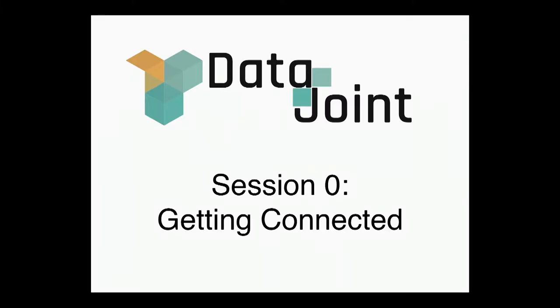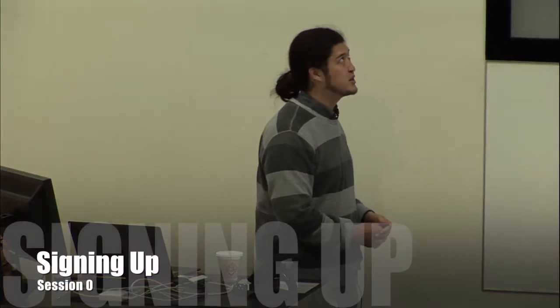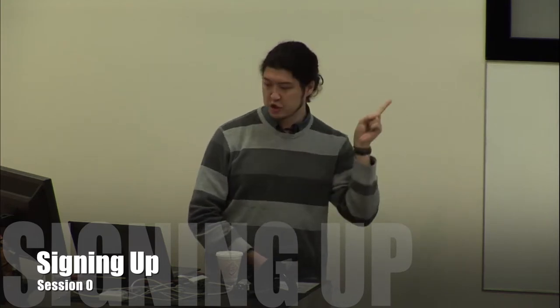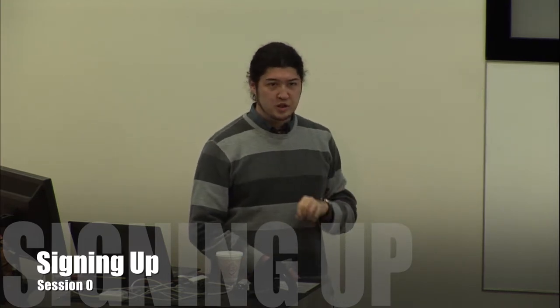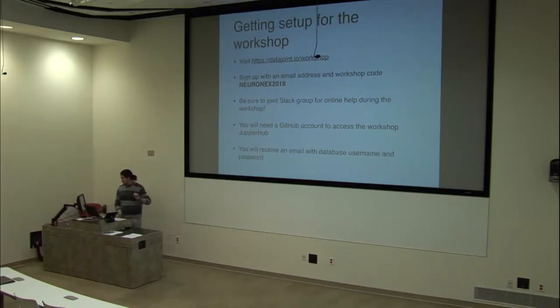Session zero is entitled 'Getting Connected' — not necessarily talking about getting connected to each other, but getting connected to our work database. Here are the simple instructions: first, visit the datajoint.io/workshop website. You'll be met with two boxes — one for your email and one for a workshop code. The code is simply 'Neuronex2018', just to prevent random people from hammering our resources.